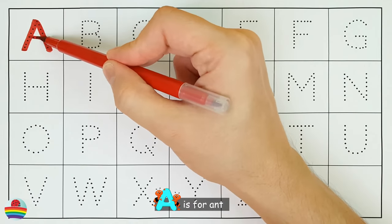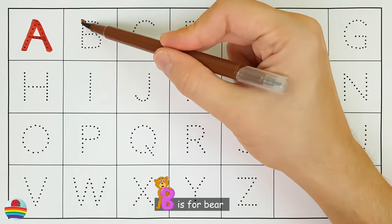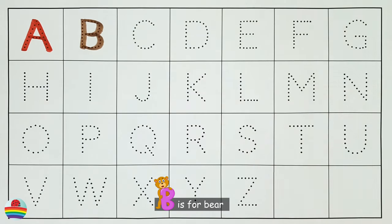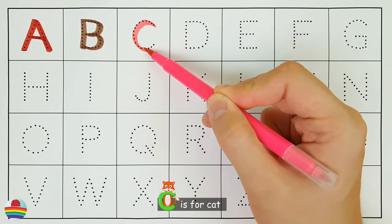A. A is for Ant. B. B is for Bear. C. C is for Cat.